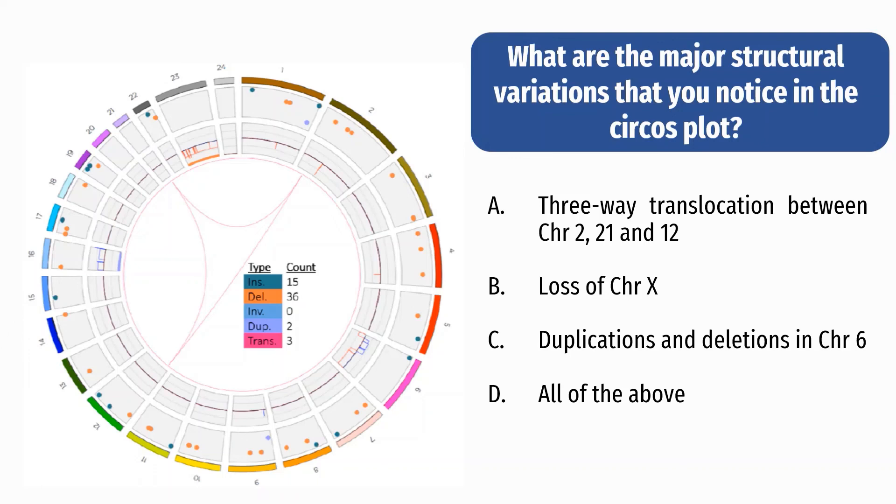If you guessed all of the above, you are correct. Here we see the three-way translocation between chromosome 2, 21, and 12. Here is the loss of chromosome X. And lastly, here are the duplications and deletions on chromosome 6.